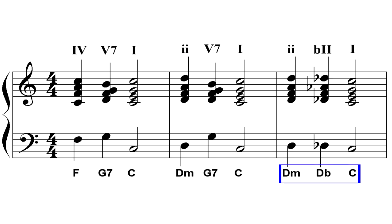In the key of C, this is D minor, D flat major, then C major. Note that the last example shows an exception for avoiding parallel fifths — this exception is allowed because the chords themselves are descending.